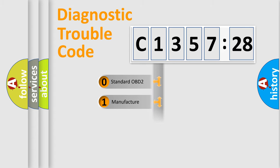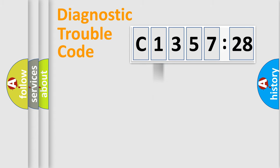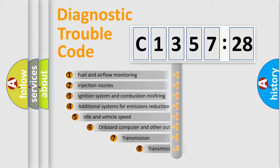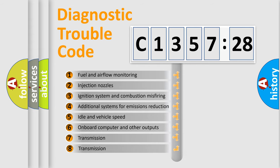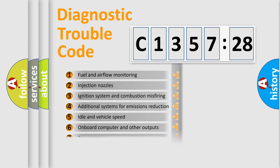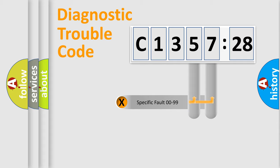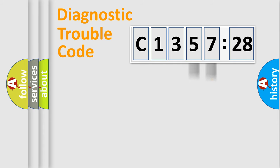If the second character is expressed as zero, it is a standardized error. In the case of numbers 1, 2, or 3, it is a manufacturer-specific expression of a car-specific error. The third character specifies a subset of errors. This distribution is valid only for the standardized DTC code.